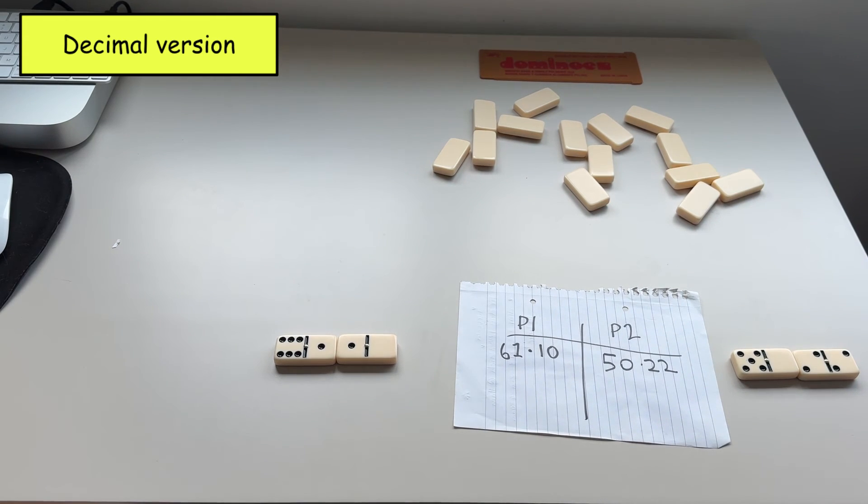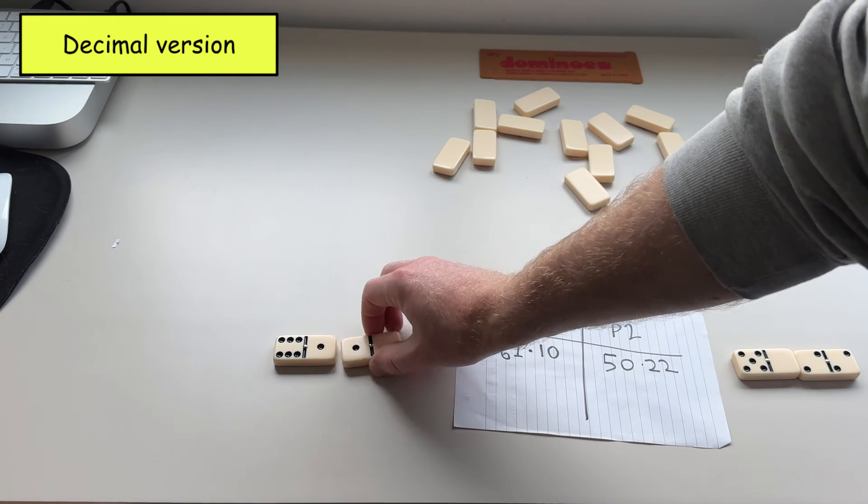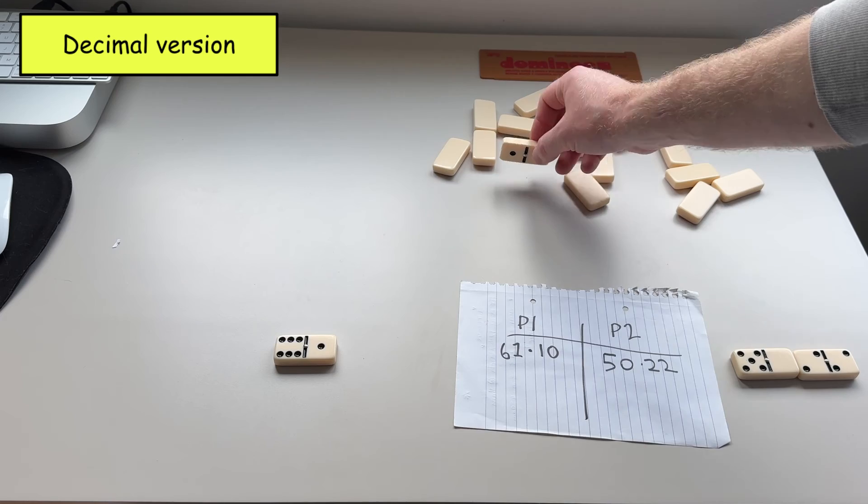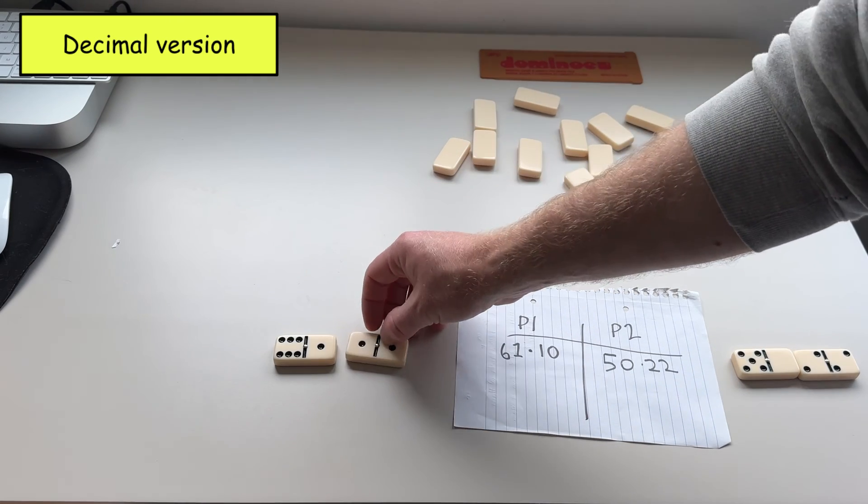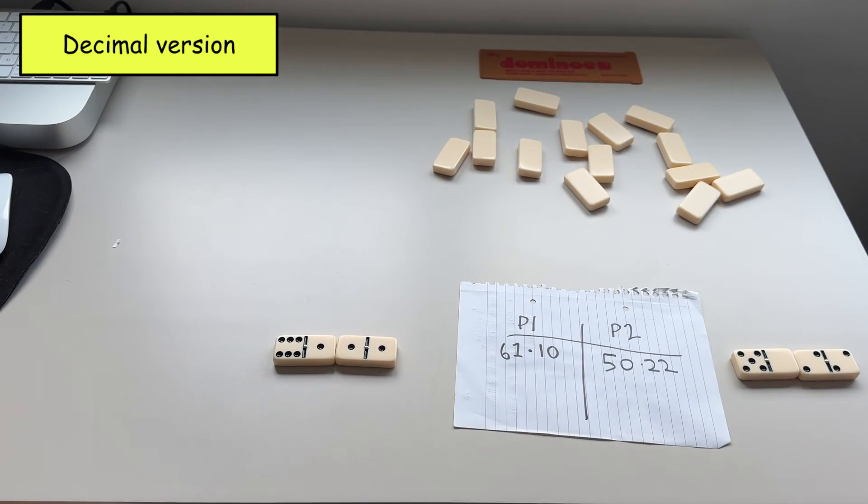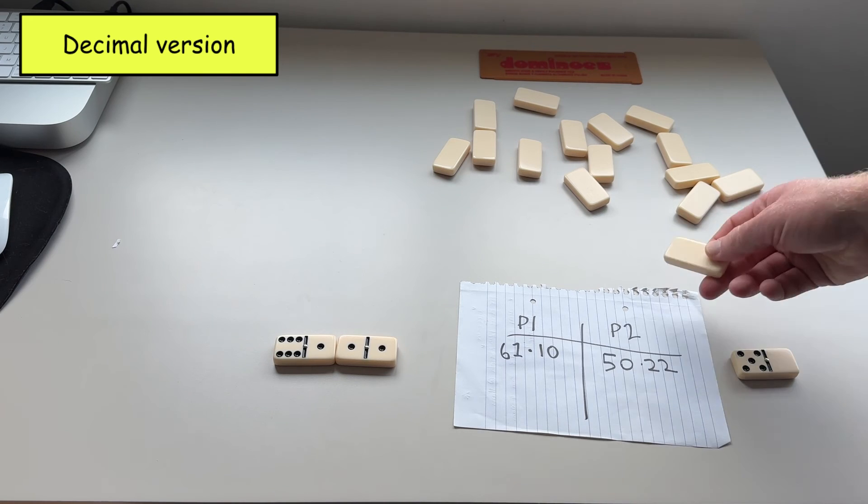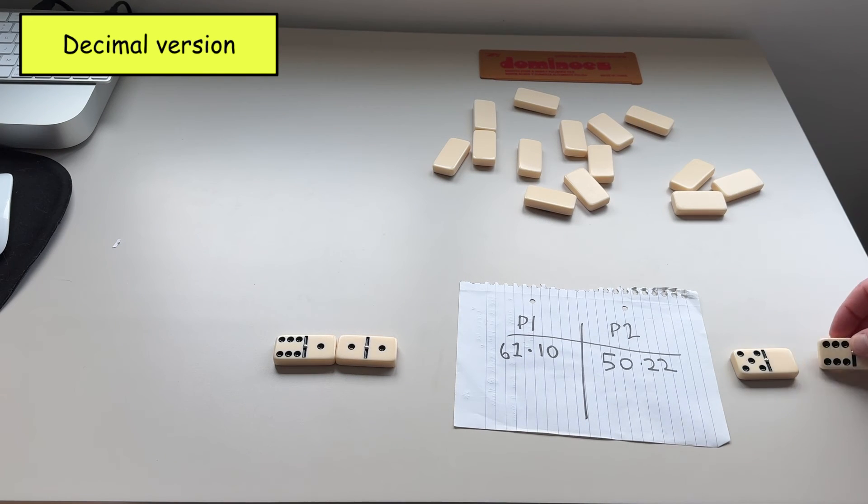And again the next stage of the game would be to decide if they want to stick or twist. So this player would probably decide to twist and pick another domino. So they've slightly improved their number. This player here might decide to twist and this player has significantly improved their number.